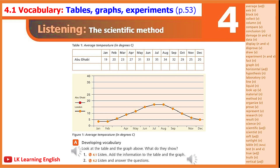Listen. Add the information to the table and the graph. Add the word London to the first column of the table. Write the data for London in the table. You can get it from the graph. Write one number in each block. Add the missing months to the graph.